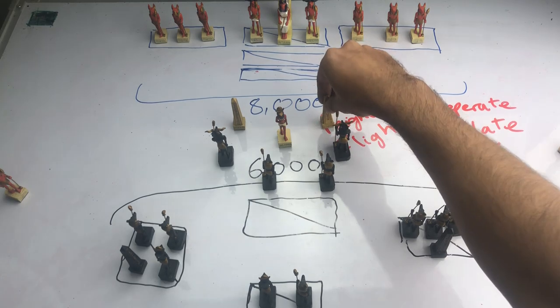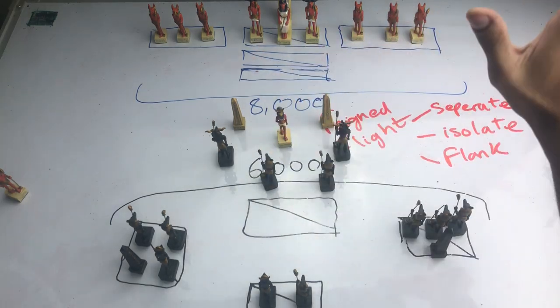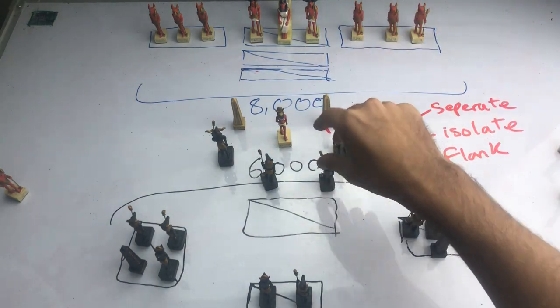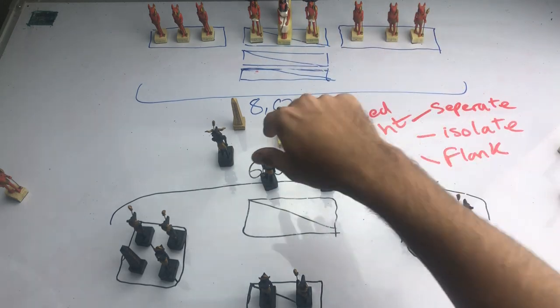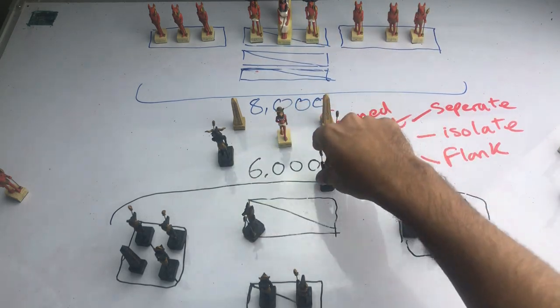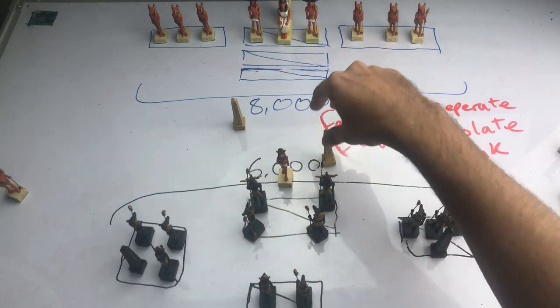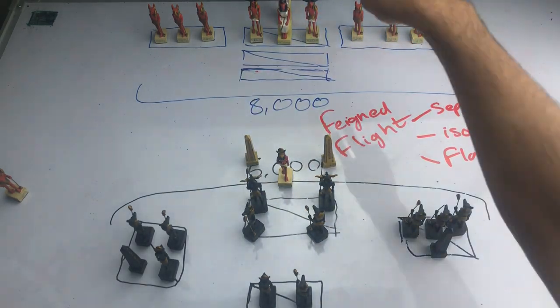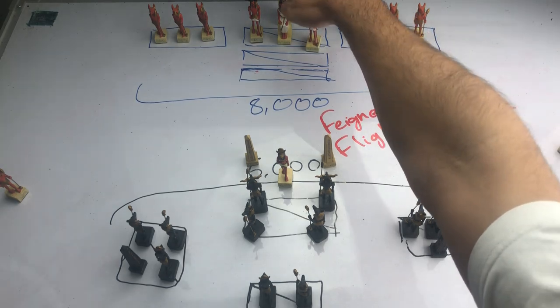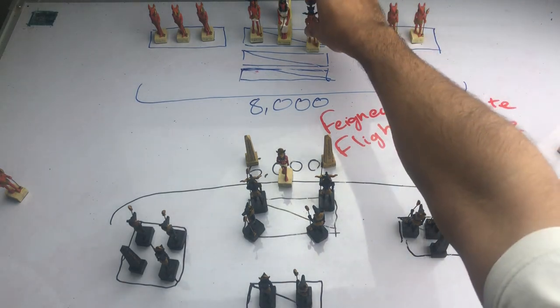And it is at the second line that the Mongols spring their trap. Because once the second line advances, the Mongols pretend like it's too overwhelming. It's too strong. You know, they spring this feigned flight and they begin to run. In doing so, they entice the European cavalry to charge. And it forces the Duke of Poland to send the rest of his men in.